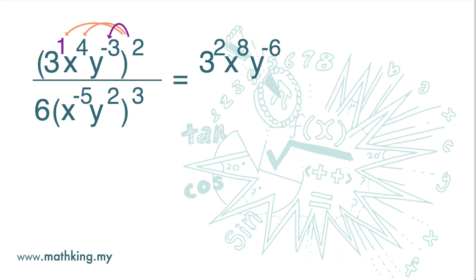Now let's move to the denominator. We copy the 6 over. 3 times negative 5 is negative 15. 3 times 2 is 6.